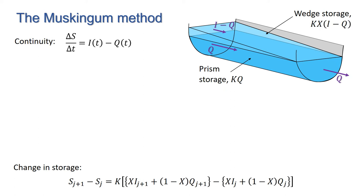Now, if we go back to the continuity equation, we have delta s over delta t equals i minus q evaluated at time t. If we take the incoming and outgoing discharges between time step j and j plus one to be averages of their values at each end of the time step, we have a discrete version of the continuity equation which looks like this.